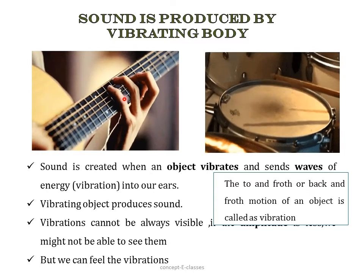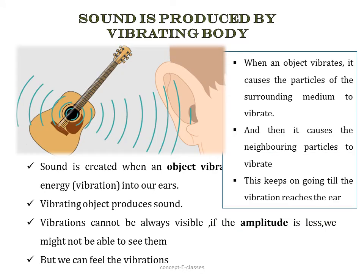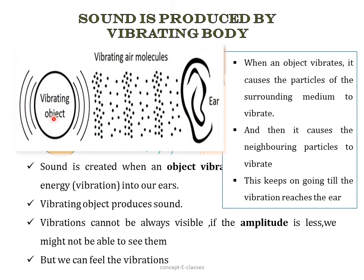When we play a guitar, the strings vibrate and as they vibrate they produce sound. When an object vibrates, it causes the particles of the surrounding medium to vibrate. For example, when we play a guitar, the surrounding medium is air. The particles in the air are forced to vibrate, causing the neighboring particles to vibrate as well. The vibrating object causes particles of the surrounding medium to collide with each other and with neighboring particles, continuing until the vibration reaches our ear.